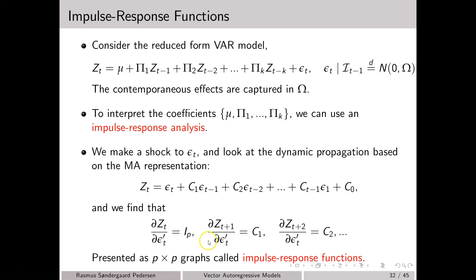We can also consider what happens to z_{t+1} if there is a shock at time t. This is given by the c_1 matrix, by simply moving the system one period ahead, and likewise for c_2. These c matrices are some rather complicated functions of the original parameters in the model. These derivatives may be represented in graphs, which we label as impulse response functions.